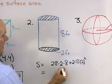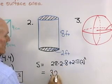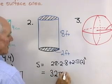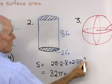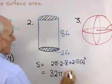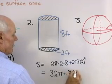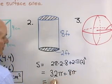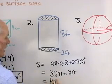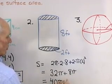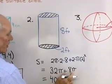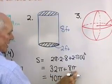So let's see what we get here for surface area. 2 times 2 is 4, times 8 is 32π, plus here I have 2 squared, which is 4, times 2 is 8π. And I can add 32π and 8π and get 40π.